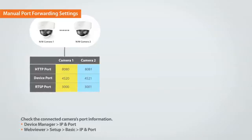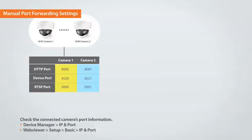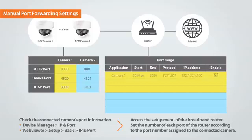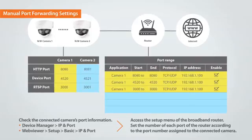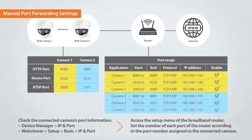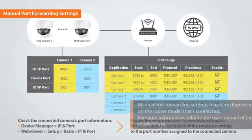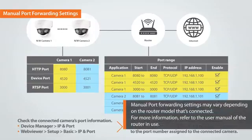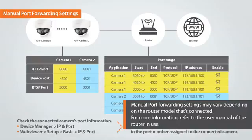You can check the camera's IP address and port by accessing either: 1) Device Manager, then IP and Port, or 2) Web Viewer, then Setup, Basic, and IP and Port. Access the Setup menu of the broadband router and set the number of each port of the router according to the port number assigned to the connected camera. Save the settings and port forwarding is completed. Manual port forwarding settings may vary depending on the router model connected. For more information, refer to the user manual of the router in use.